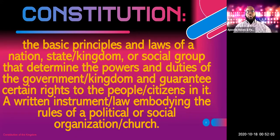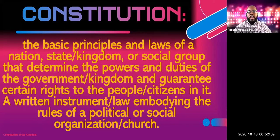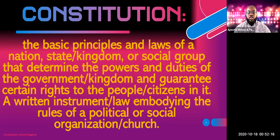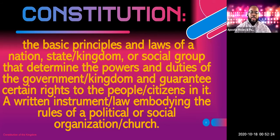Write this down. The constitution: the basic principles and laws of a nation, state, or kingdom. A social group that determines the powers and duties of the government and guarantees certain rights to the people and citizens. A written instrument — a law embodying the rules of a political or social organization, which is or can be the church.